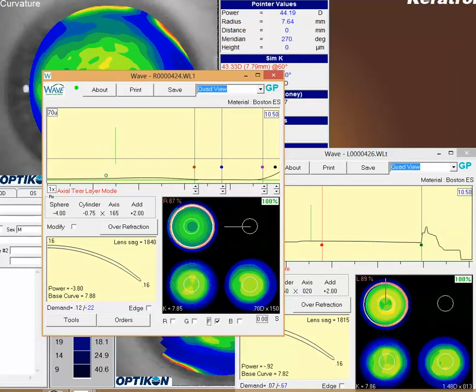I find quite often if I can't get a lens to center well in axial, if I switch over to tangential, sometimes that will get those lenses sitting nicely on the eye and also will help to reduce the lens awareness in the periphery.